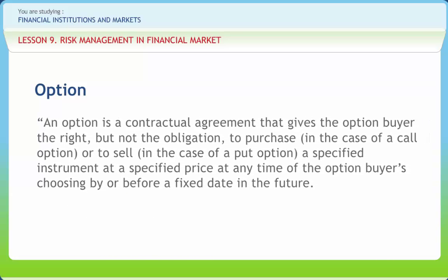An option is a contractual agreement that gives the option buyer the right, but not the obligation, to purchase — in the case of a call option — or to sell — in the case of a put option — a specified instrument at a specified price, at any time of the buyer's choosing, by or before a fixed date in the future. The option is exercisable only by the owner, namely the buyer of the option. Owners have no shareholder rights such as voting rights or dividend rights. Options allow the buyer to profit from favorable movements in exchange rates. An investor who writes a call option against stock held in their portfolio is said to be selling covered options. Options sold without stock to back them up are called naked options.